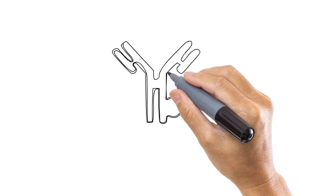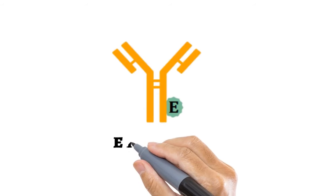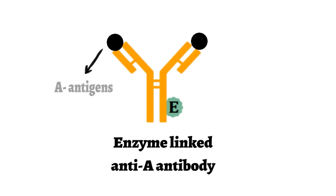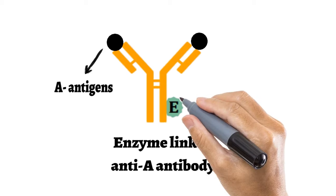Second and the most important thing that you must have is the enzyme-linked anti-A antibody. This antibody also binds to the A antigen like the antibodies which are present in the sample, but these antibodies are coupled to the enzyme.